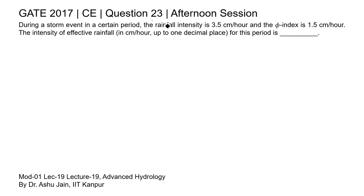In this question, the rainfall intensity is given as 3.5 centimeter per hour, and the phi index is also given as 1.5 centimeter per hour. We need to calculate the intensity of effective rainfall.